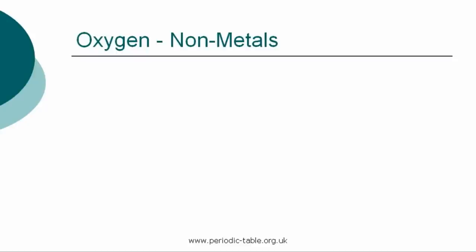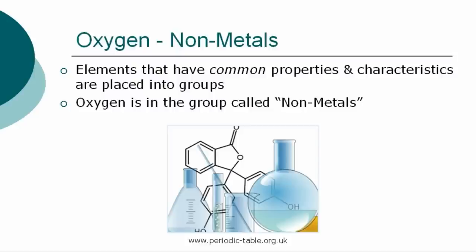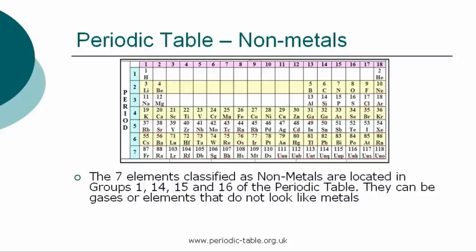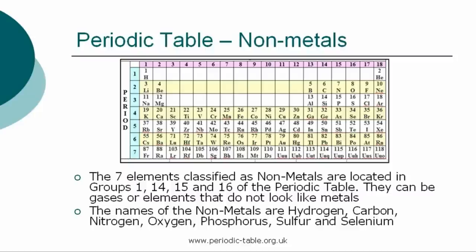Once the properties of an individual element have been identified, it is placed into a group of elements which have common properties and characteristics. Oxygen is in the group called the non-metals. The seven elements classified as non-metals are located in groups 1, 14, 15, and 16 in the periodic table. The names of the non-metals are hydrogen, carbon, nitrogen, oxygen, phosphorus, sulfur, and selenium.